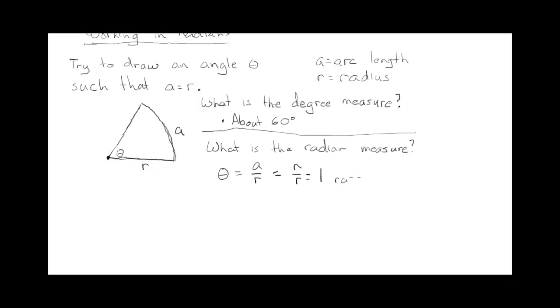So we don't use that degree symbol, because we're not measuring in degrees. We don't really have a symbol for radians. We would just say 1 radian.